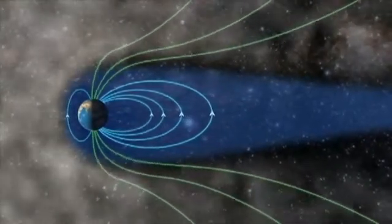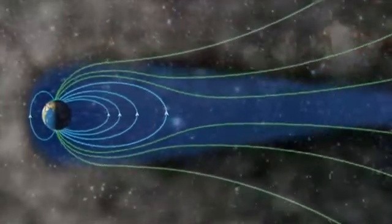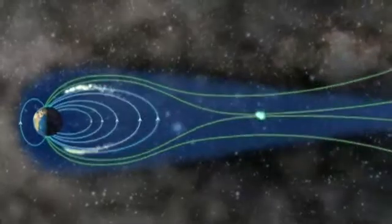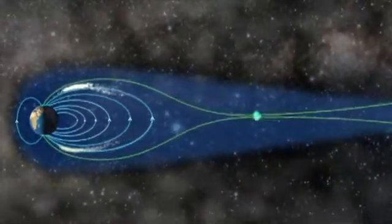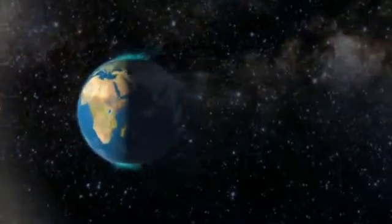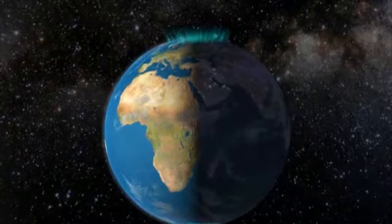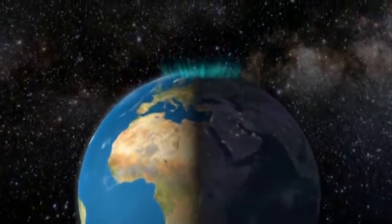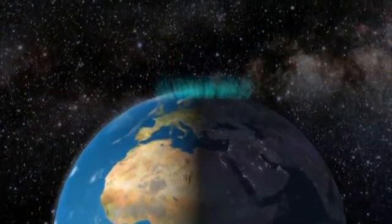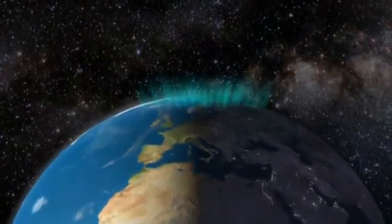The magnetic fields stretch further back and couple together. The magnetic rubber band breaks and gas from the solar storm streams along the magnetic lines towards the poles on the night side. This is the nighttime aurora.